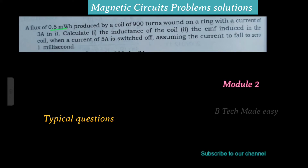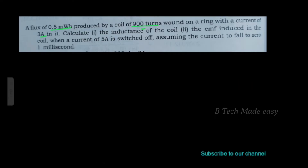A flux of 0.5 milliweber is produced by a coil of 900 turns wound on a ring with a current of 3 ampere in it. Calculate the inductance of the coil. Second, find the EMF induced in the coil when a current of 5 ampere is switched off, assuming the current falls to 0 in 1 millisecond.